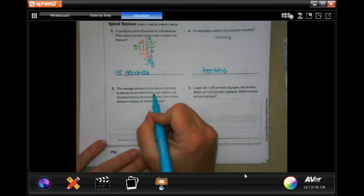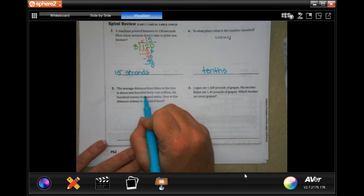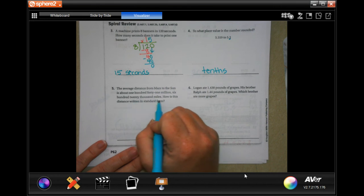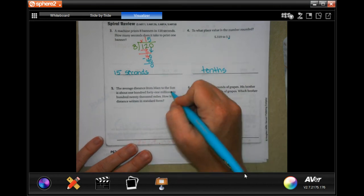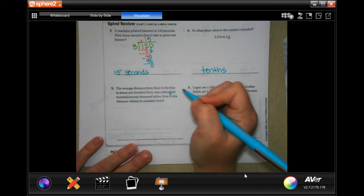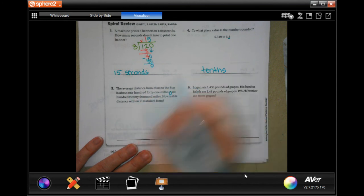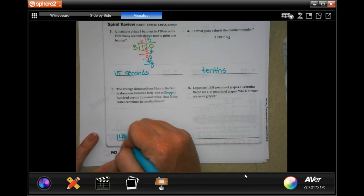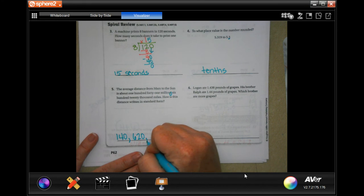The average distance from Mars to the sun is about 141,620,000 miles. How is this distance written in standard form? So I want to point out again, boom, that's where our commas go.